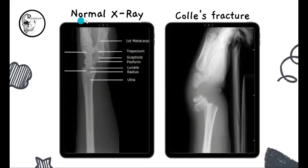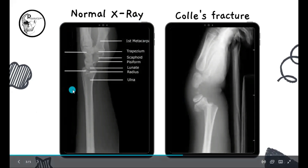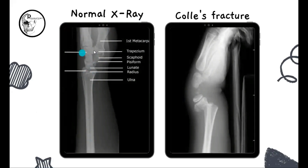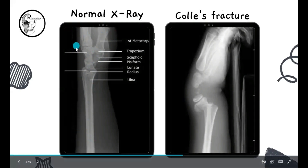Before going to that, we will see the normal X-ray of the radius. Here you can see the lower end of radius, and this is the palm where you can see the carpal bones. This is the ventral aspect of the palm or the palmar surface, and this is the dorsum of the hand. You can see the soft tissue line — it is almost a straight line here.